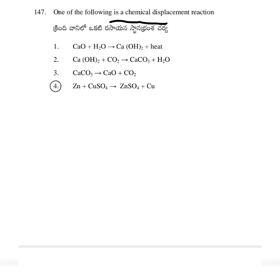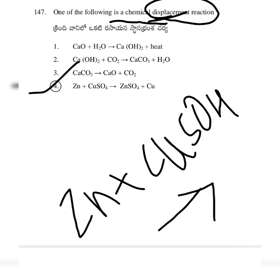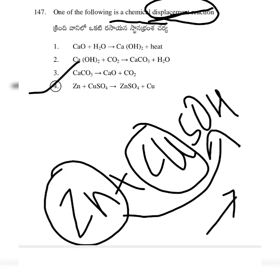One of the following is a chemical displacement reaction. Option 4: Zinc plus copper sulfate (CuSO4). This gives rise to a reaction where Zinc displaces copper — it separates copper. Therefore, it is a chemical displacement reaction.